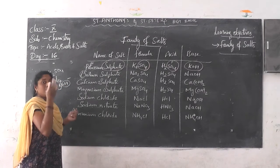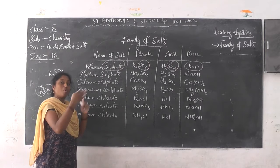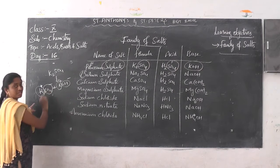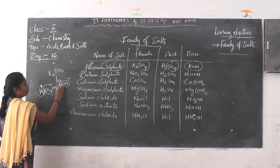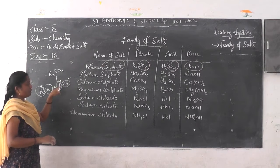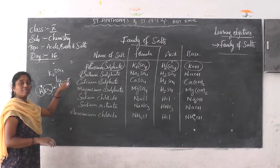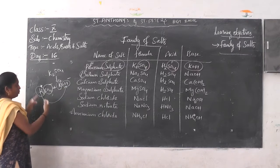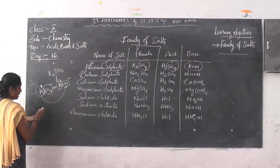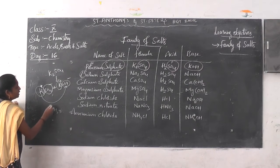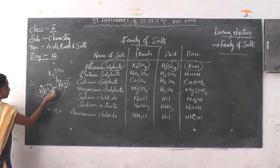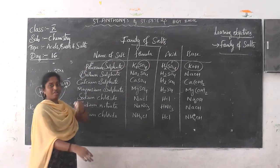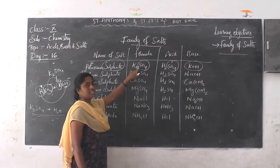Whenever the reaction is taking place, anion and cation will be present — positive charge and negative charge. Sulphuric acid consists of a positive charge and sulphate comes under the negative charge — cation, anion. The same way, in potassium hydroxide, potassium comes under the cation and OH- comes under the anion. So the combination gives K2SO4 — the H+ ions react with OH- ions to give H2O, and K and SO4 combine to give K2SO4, which is potassium sulphate.